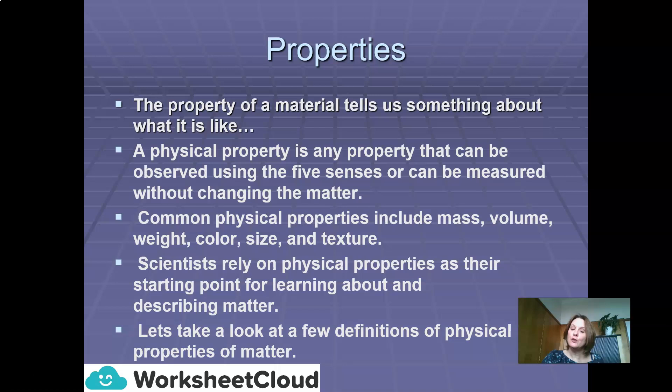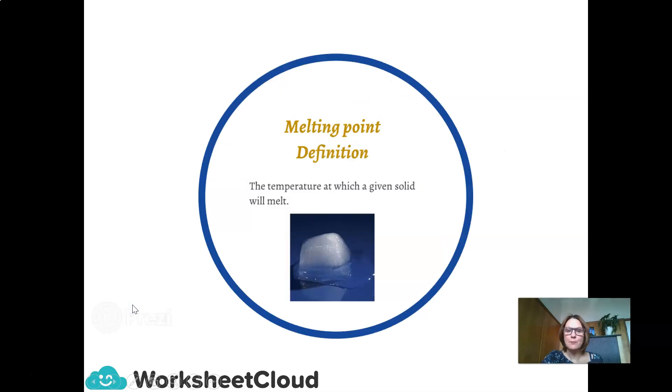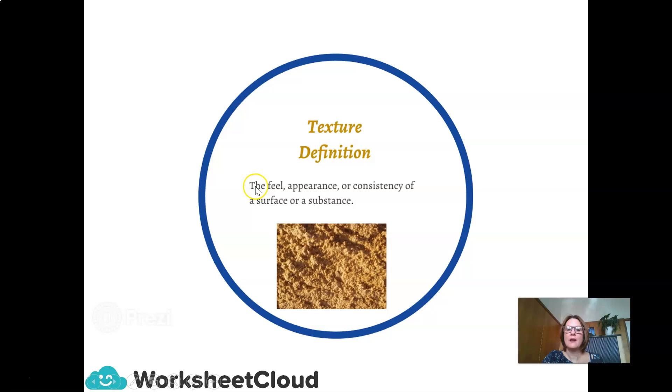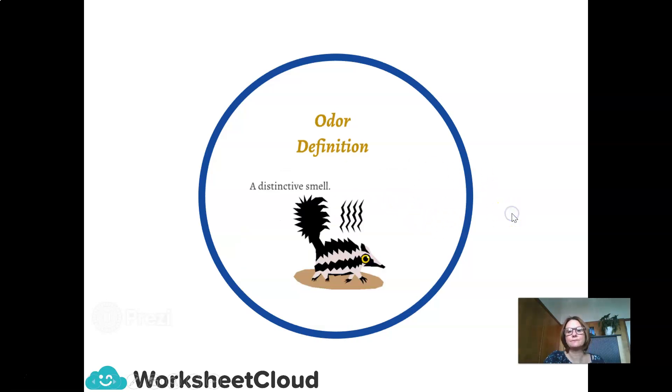Let's take a look at a few definitions of physical properties of matter. Boiling point is the temperature at which a liquid boils and turns to vapour. Melting point is the temperature at which a given solid will melt, like a block of ice. Texture is the feel or the appearance or consistency of a surface or a substance. Colour is the property possessed by an object of producing different sensations on the eye as a result of the way the object reflects or emits light. Odour is a distinctive smell.